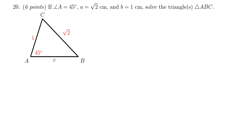In this video, we provide the solution to question number 20 from the practice final exam for Math 1060, in which we're given a triangle with one interior angle of 45 degrees, its opposite side is √2 centimeters, and one of the sides next to the angle is 1 centimeter. We're supposed to solve for this triangle if possible.